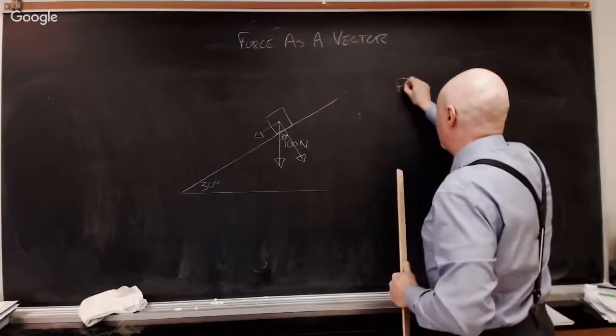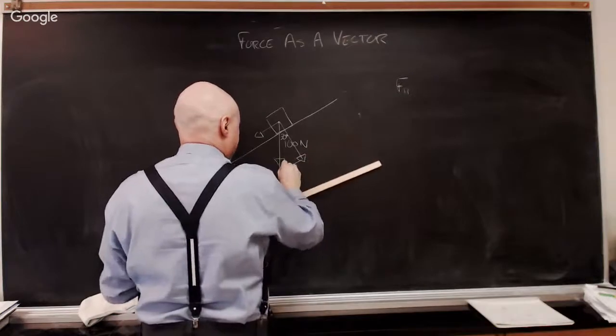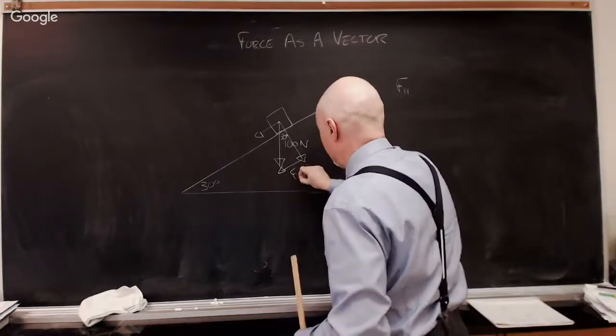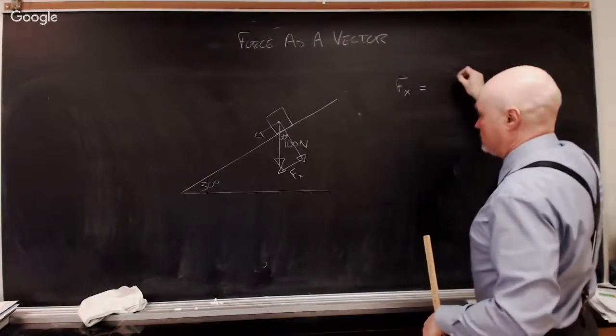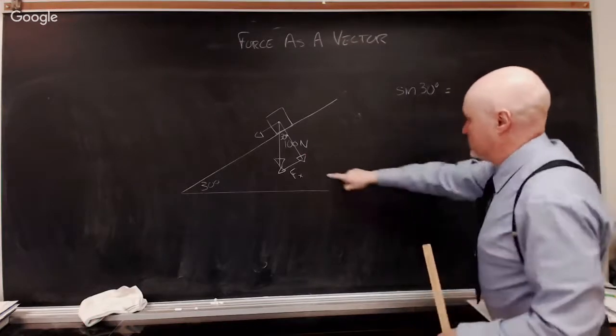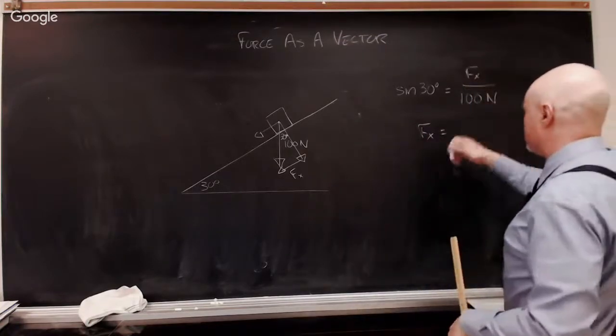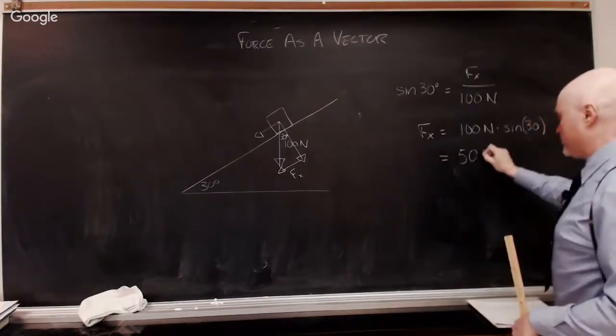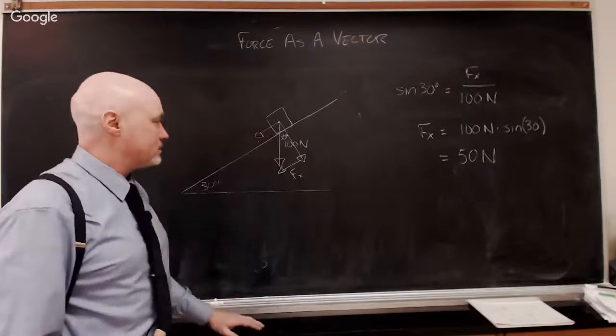So the parallel, the force that's parallel to the ramp, in other words this force is actually just the same as that force right there, which is opposite 30 degrees. And so this is the f parallel. Let's call it fx. I think it's a little bit better. So sine of 30 is equal to the opposite side, which is fx over 100 newtons. And so the parallel force, or the force in the x direction, is 100 newtons times the sine of 30 degrees. And I happen to know the sine of 30 degrees because I know my special triangles is 0.5. And so the force pulling that parallel to the ramp is 50 newtons.